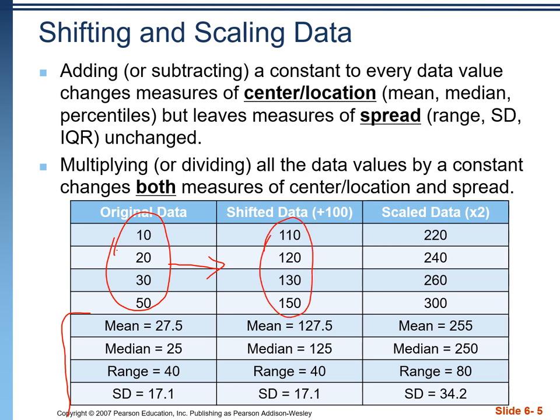Now if we scale those numbers by multiplying by two, the mean doubles, the median doubles, and the measures of spread also double because the numbers are now twice as spread out. So when we shift data by adding or subtracting a constant, measures of center and location change but measures of spread don't. When we scale data by multiplying or dividing, everything changes.